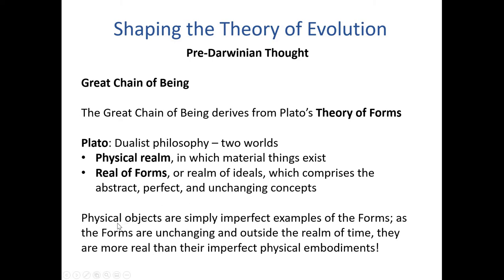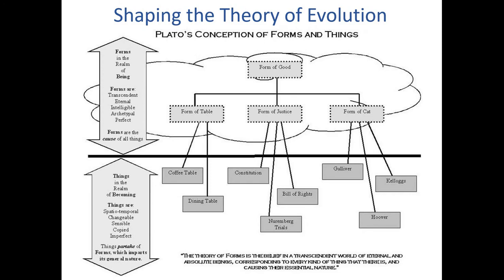Plato believed that physical objects were simply imperfect examples of the forms. Since the forms are unchanging and outside the realm of time — timeless and never changing — he believed that the forms are actually more real than their imperfect physical embodiments. Within the realm of being, you can see there are ideals that exist outside of the physical world, just in the world of the forms, comprising both ideas and physical things.